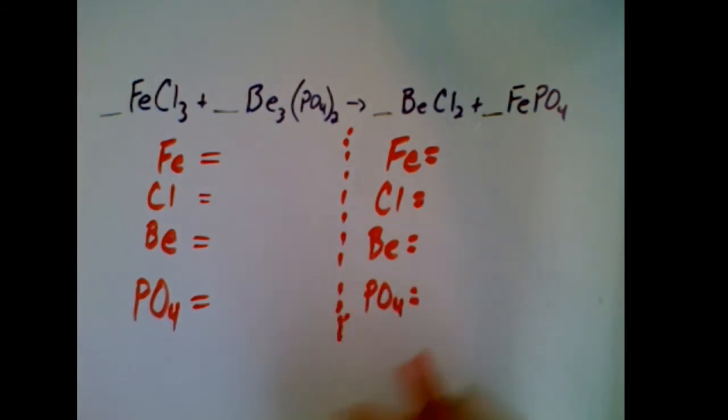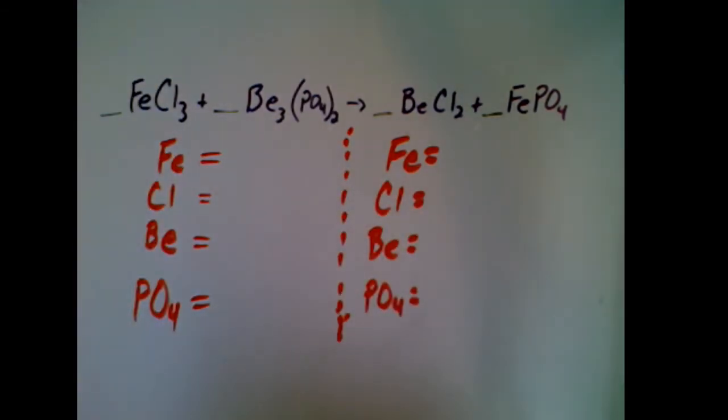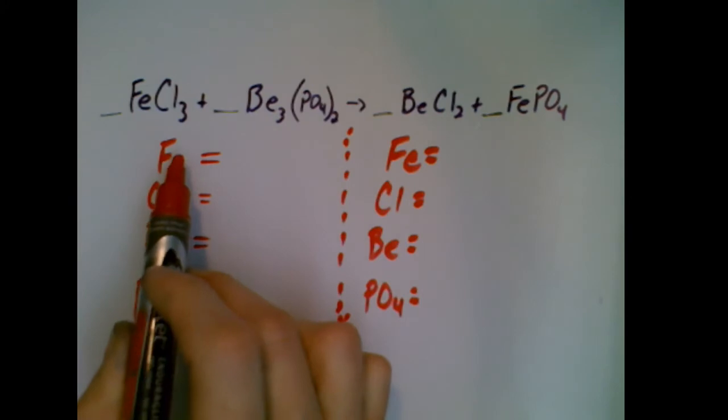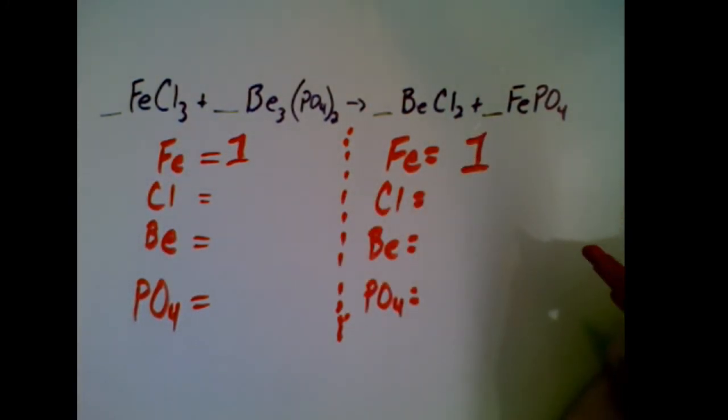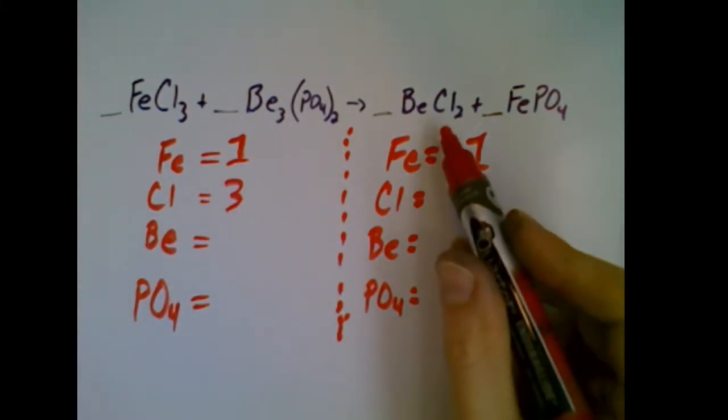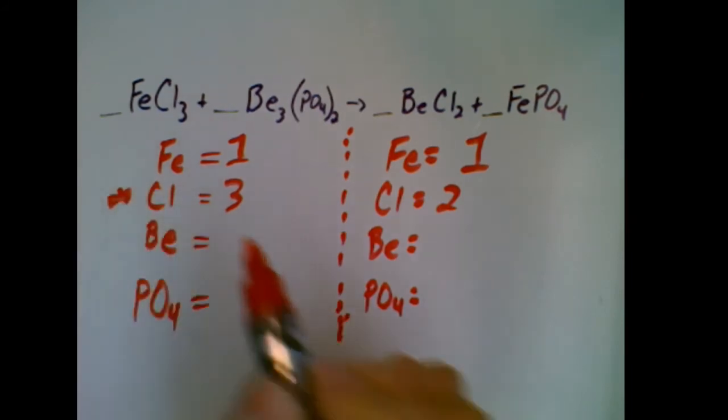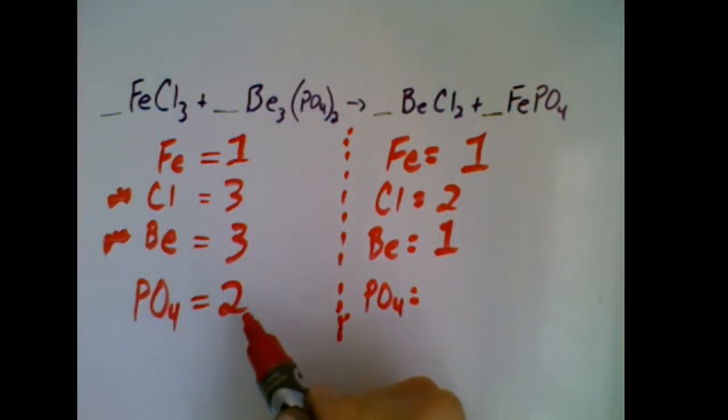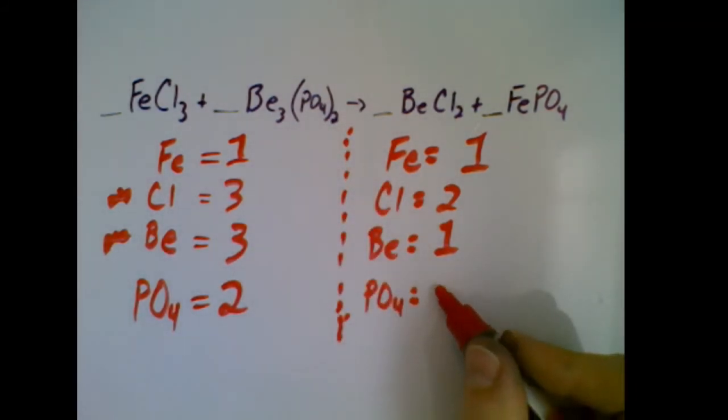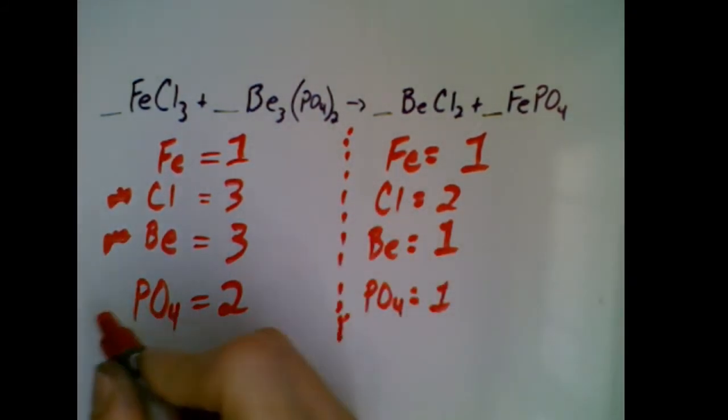If you find this method helps you to start, go for it. Try and make sure you line up the different elements across from each other. I will say though, if you're in grade 12 chemistry or doing stoichiometry, you're going to want to get past this point where you're writing it out. You're going to want to get to the point where you can look at it, balance it, and go. The number of Fe's on the left: I have one Fe on the left, one Fe on the right. Cl's: I have three Cl's and two Cl's, so not balanced. I have three Be's and one Be, not balanced. PO4: I have two PO4s and one PO4, not balanced.